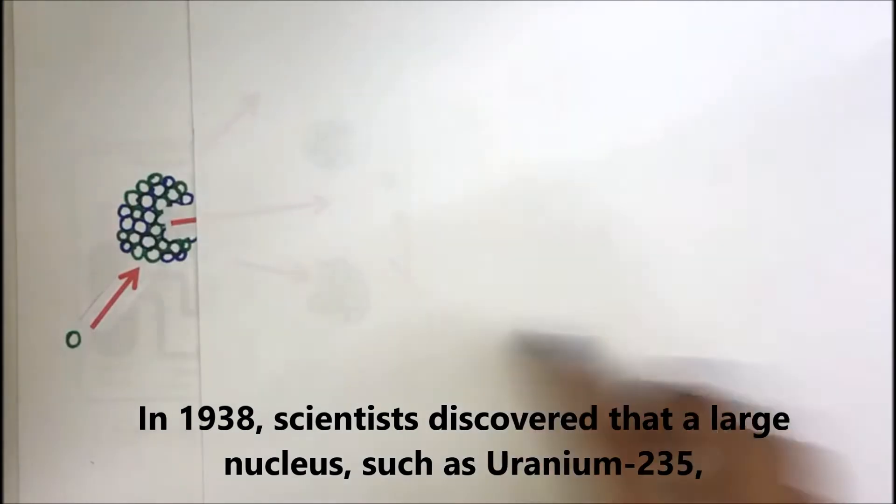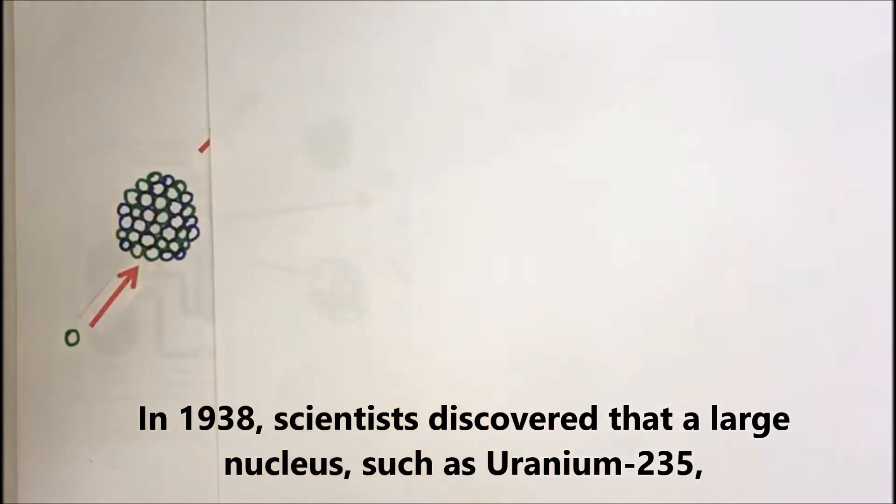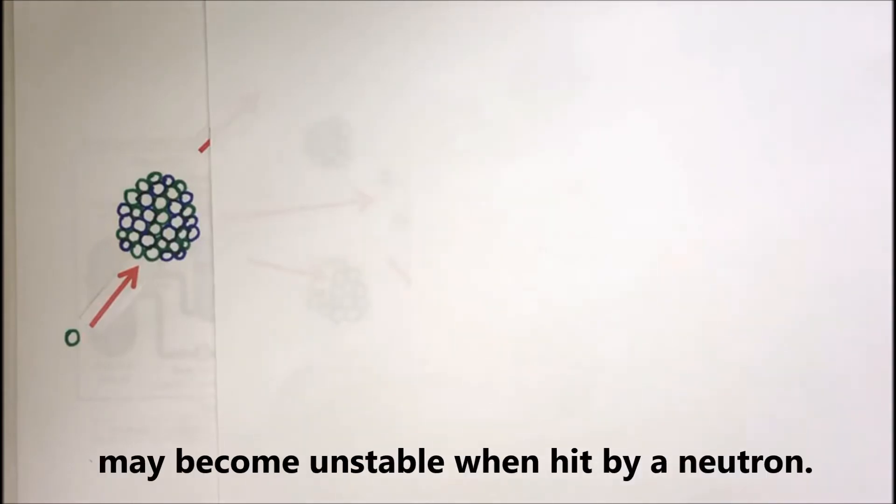In 1938, scientists discovered that a large nucleus, such as Uranium-235, may become unstable when hit by a neutron.